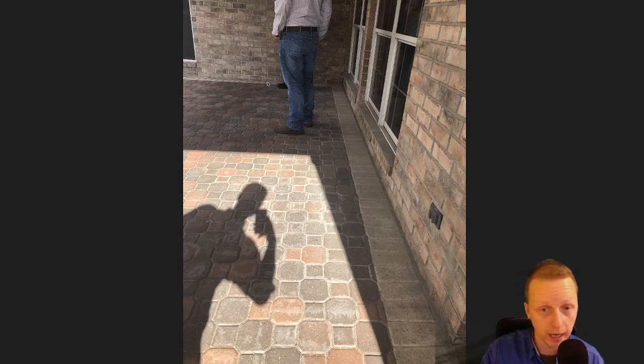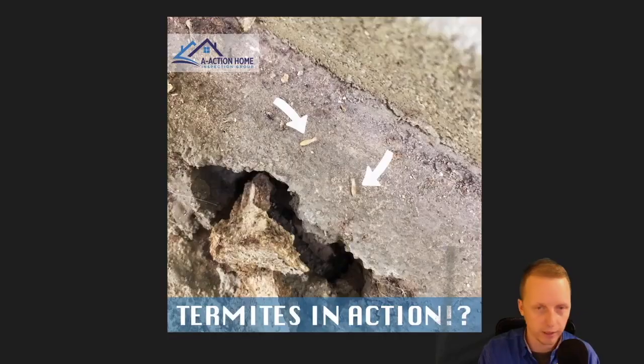This is a conducive condition to termites — you want to write this up if you see it. You can see how this patio section is right up against the brick. The termites could be there and you wouldn't even know it. If you do have this situation, just make sure you treat that area — it's not very expensive, just don't go with the mainstream big companies.